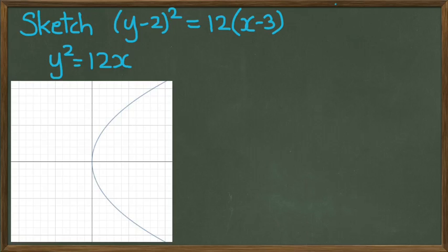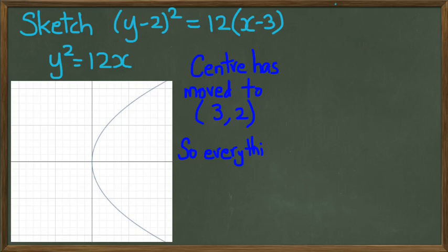But now the vertex, or the center, has actually moved. It's moved along the y-axis by two units and along the x-axis by three units. In other words, the turning point has gone to the right three spaces and up two spaces, which means the center has moved to 3, 2, which means everything in that graph is going to be moving along the vector 3, 2.